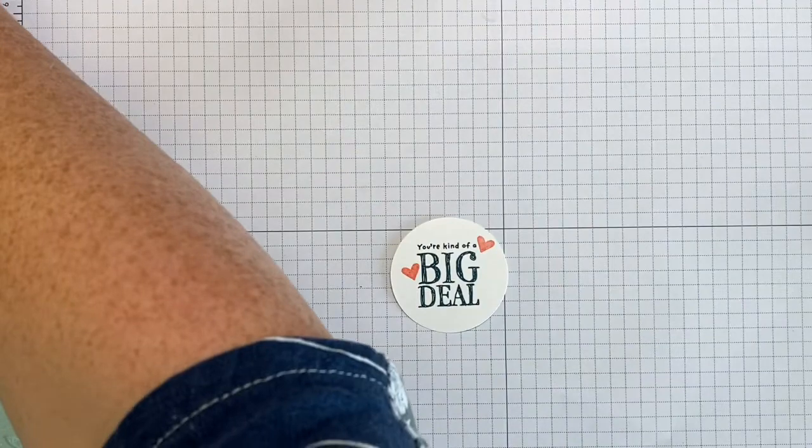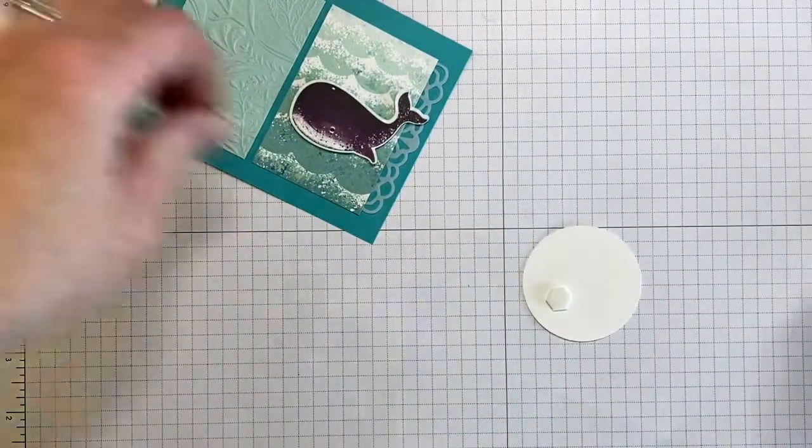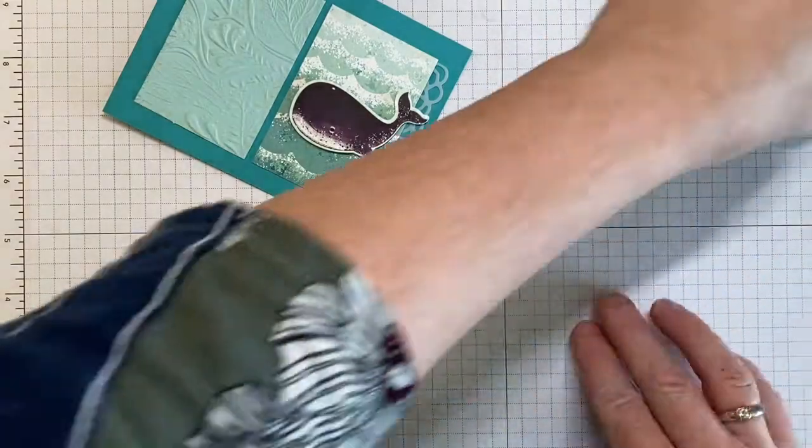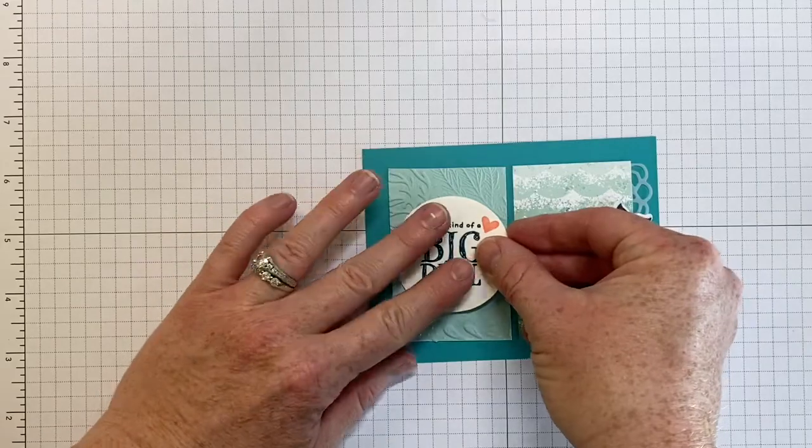Next, you'll bring in your dimensionals again and we're going to add a couple to the back and then stick that over top of the textured cardstock.